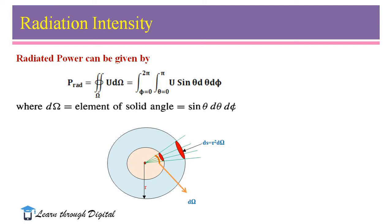Radiation intensity can also be related to the radiated power. The radiated power is given by P_rad, equal to the solid angle integration of U dΩ — that is, the integral from φ = 0 to 2π and θ = 0 to π of U sinθ dθ dφ. Here, dΩ is the element of solid angle, equal to sinθ dθ dφ. This figure illustrates the concept of radiation intensity, showing dΩ as the element of solid angle.